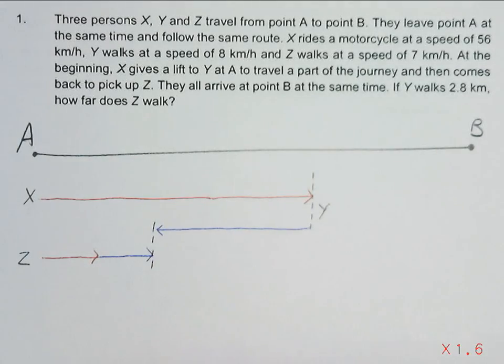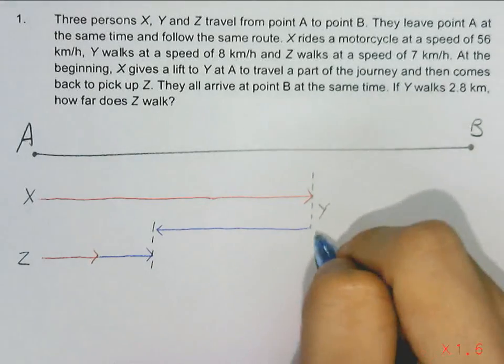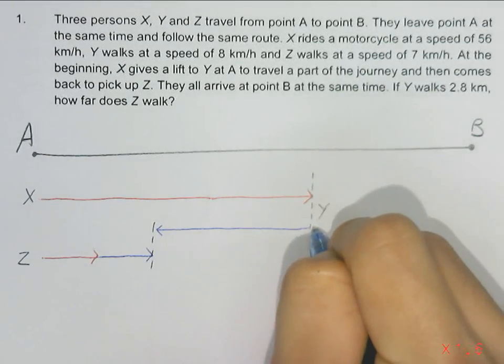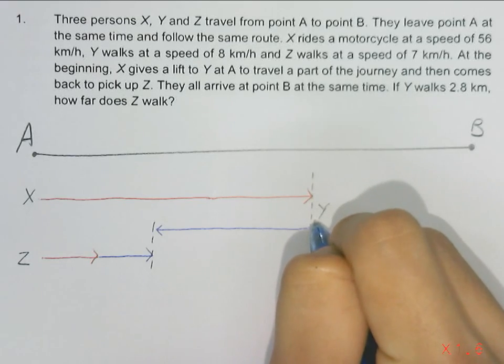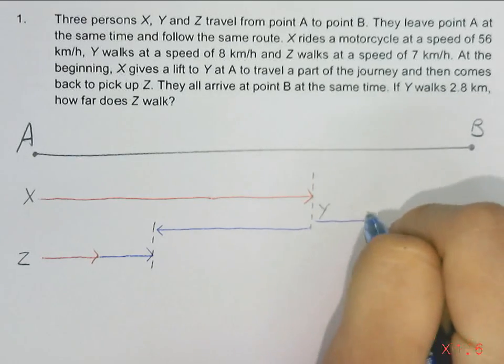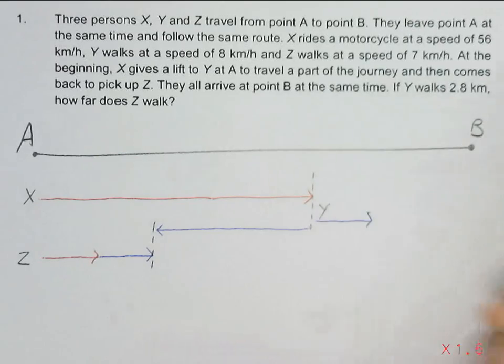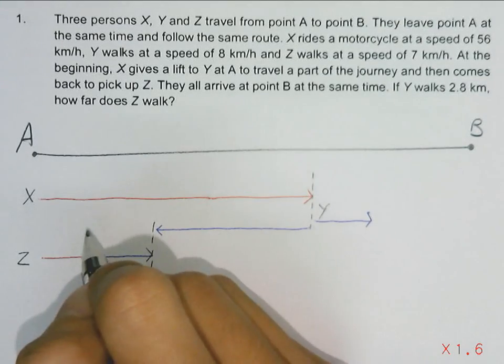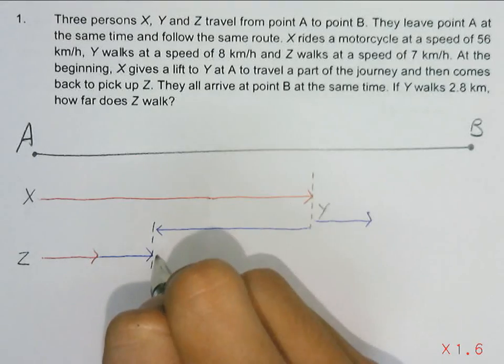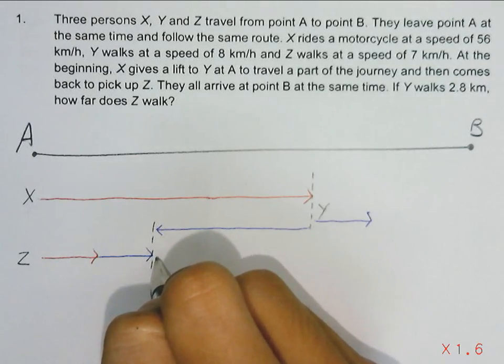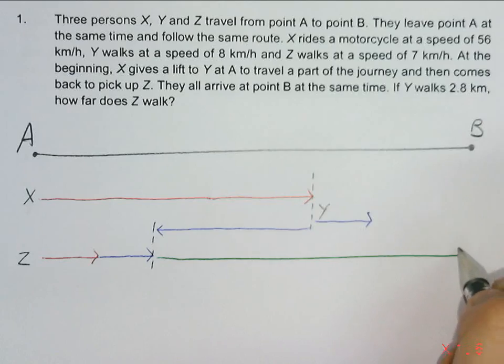Now at the same time, Y is also continuing its journey. So Y will continue to walk. Anything that happens in all these blue arrows are having the same time taken. So the third part would simply be after X picks up Z and following X's speed straight to the end point B.